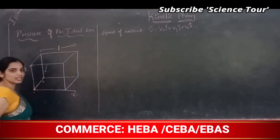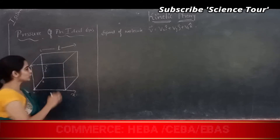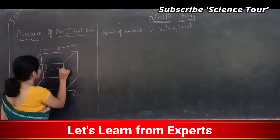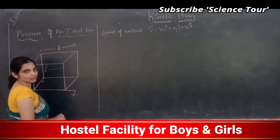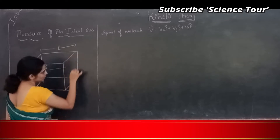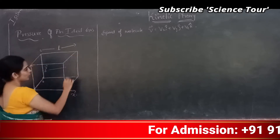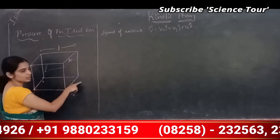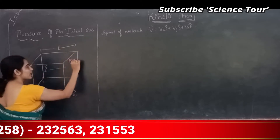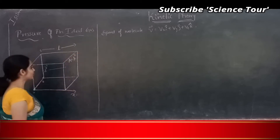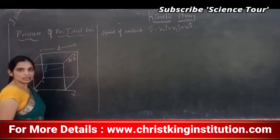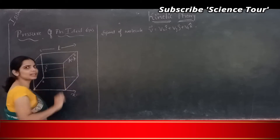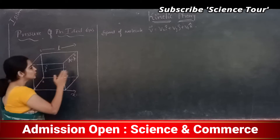Gas molecules randomly move in all directions. Let's say this molecule comes and hits this face of the cube. The area of this face is nothing but length × breadth = L × L = L². This molecule comes and hits this side of the cube. Since it is an ideal gas, this is a completely elastic collision, so after hitting, it will rebound back.